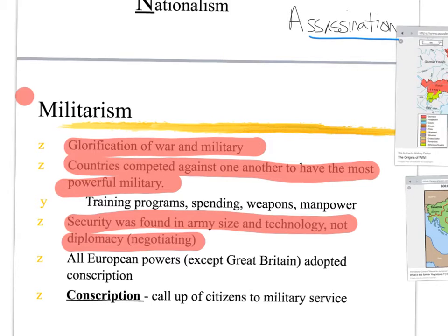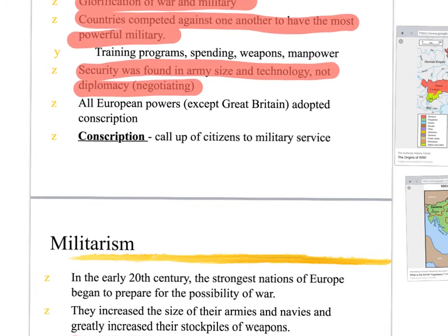Machine guns were now being created where instead of having a single-shot rifle that could maybe kill six people in a minute, a machine gun can shoot 400 bullets in a minute. Through industrial technology, we became a lot better at killing each other. And that's going to become a major problem in World War I where we're going to start to kill each other in really high numbers.